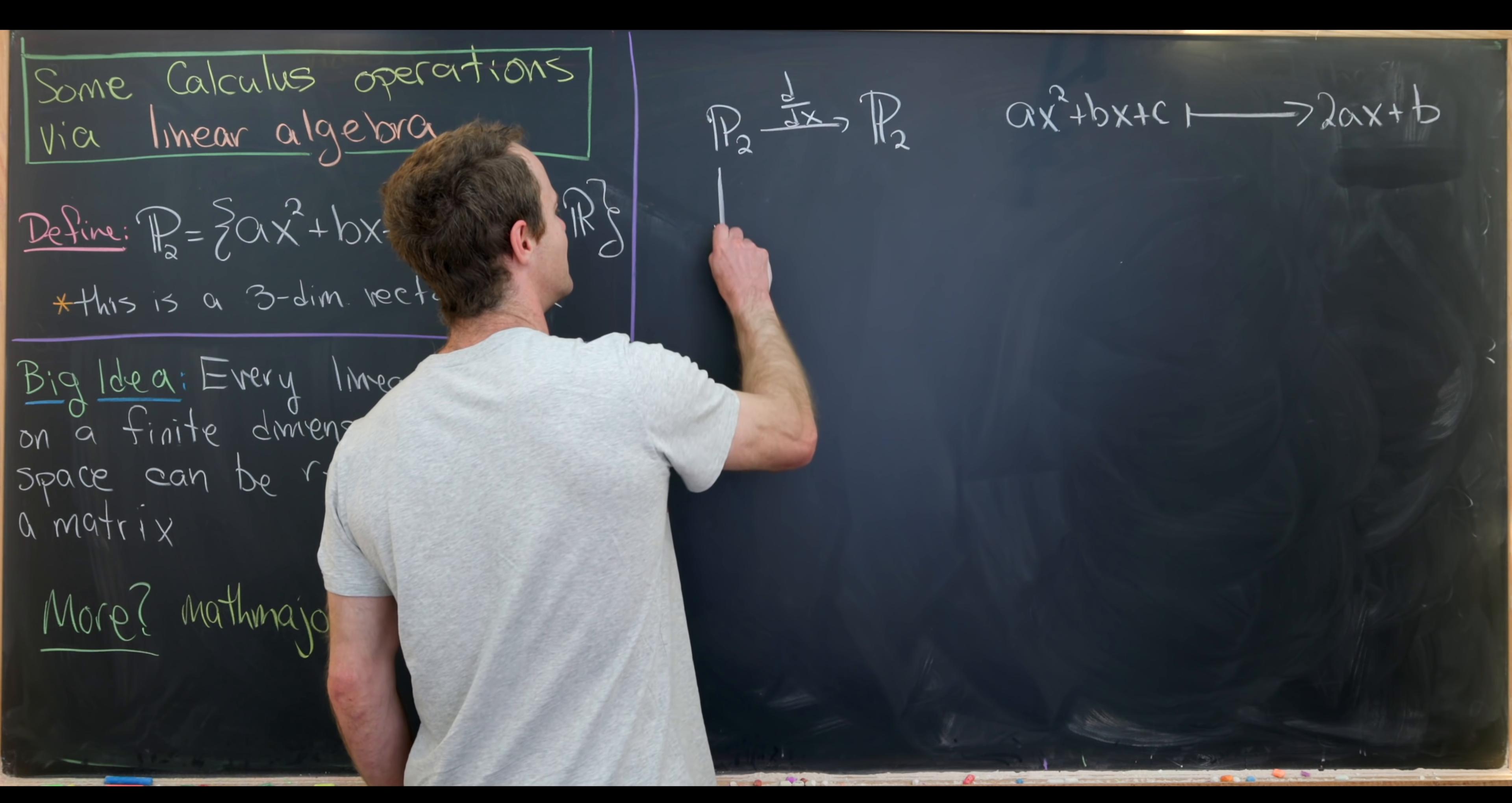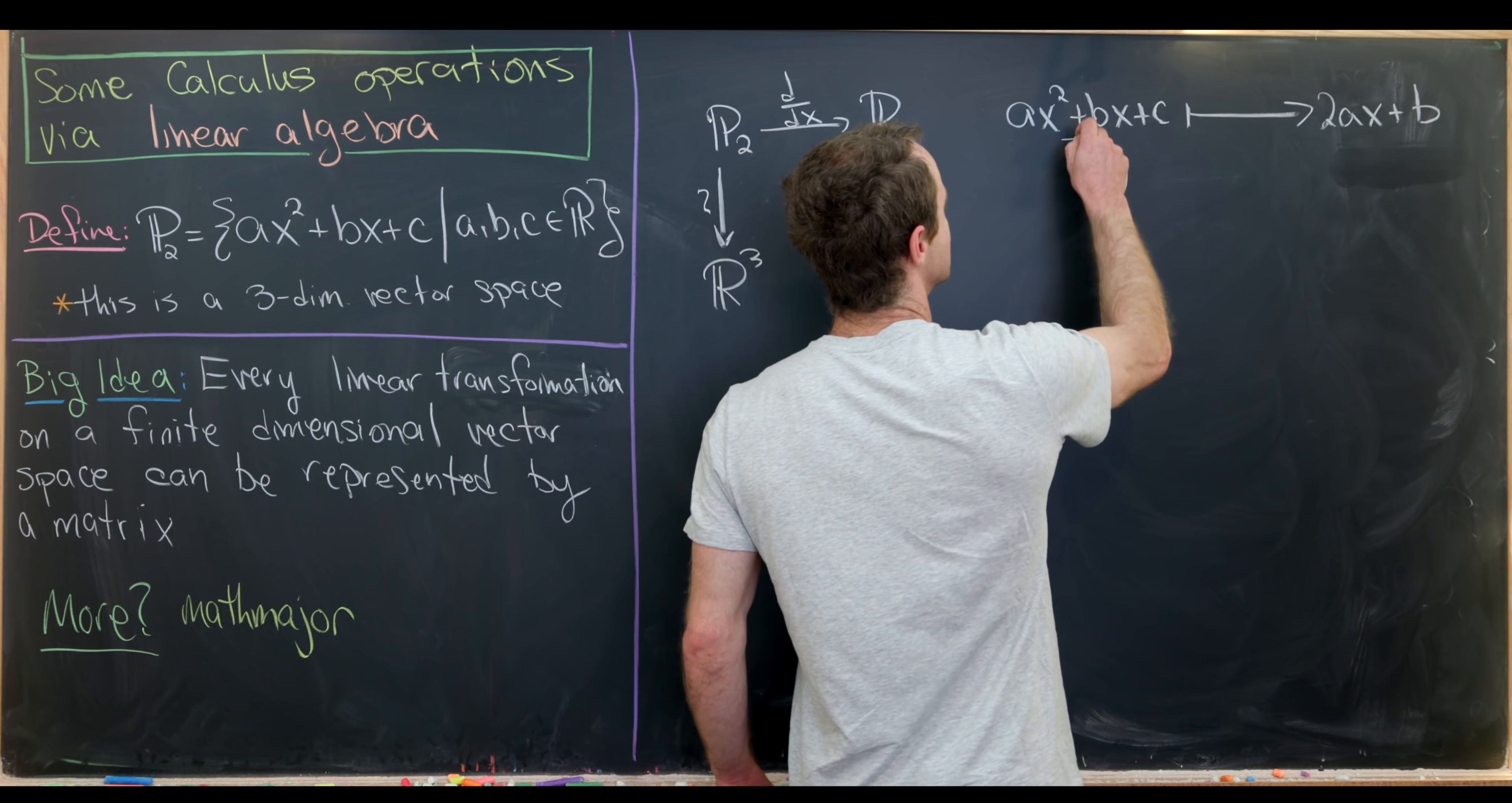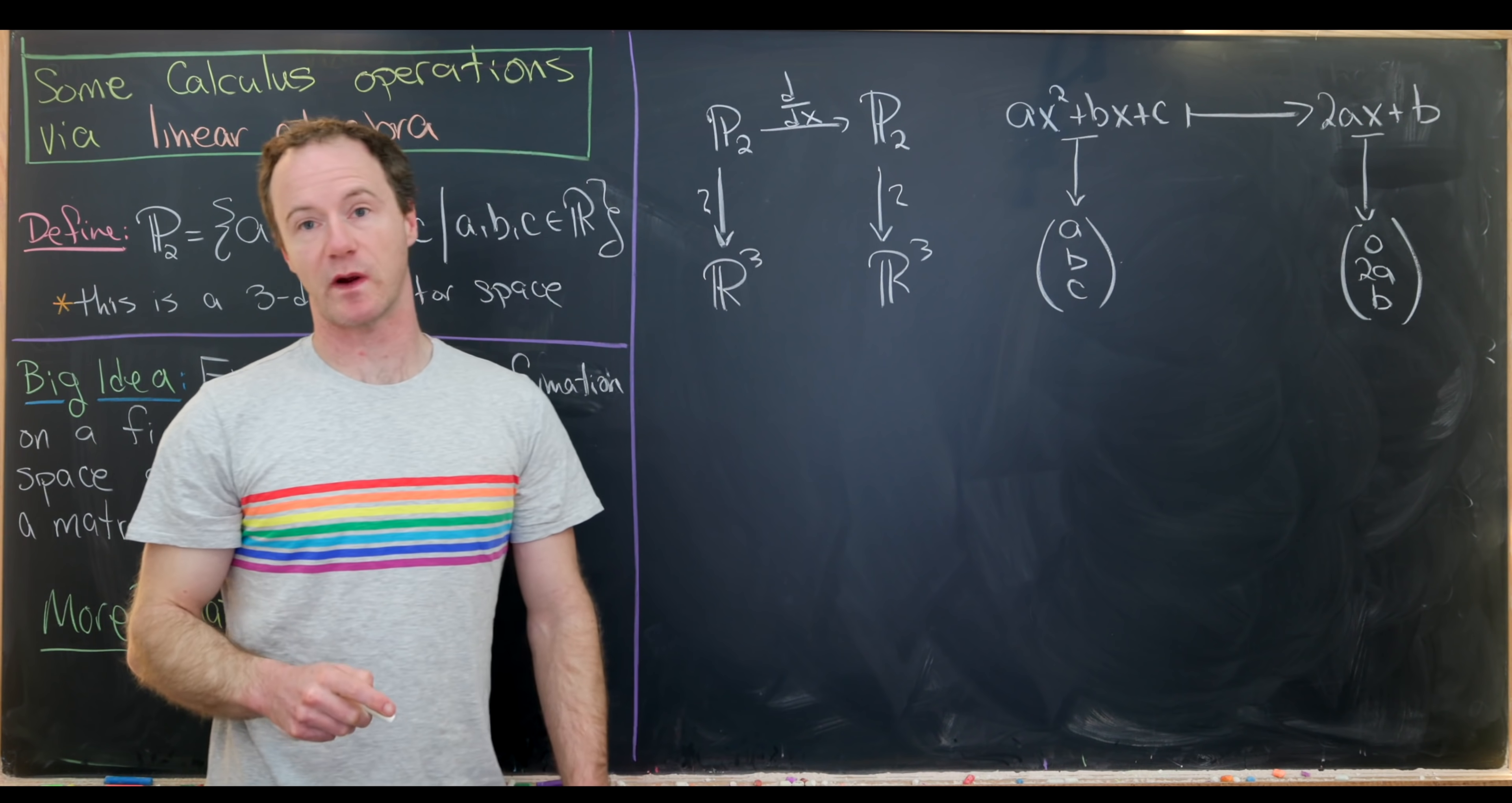That means there's some sort of obvious way to match this with R3. So let's match this obviously with R3 in both places. How could we obviously match it with R3? Well, maybe these powers of x could just be the basis vectors. So one way to do that would be to match ax squared plus bx plus c with the vector a, b, c. Let's notice that that's most definitely in R3. And then let's do this over here as well. Notice this is the vector 0, 2a, b because there's no x squared term.